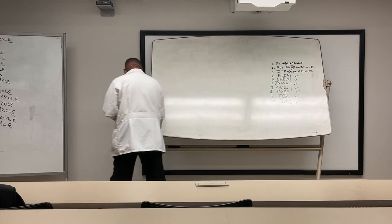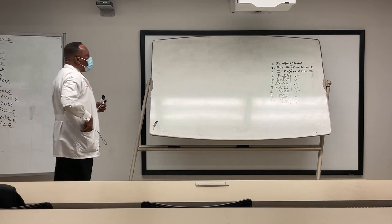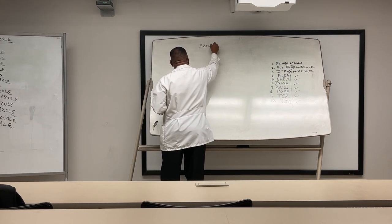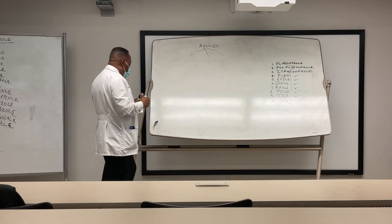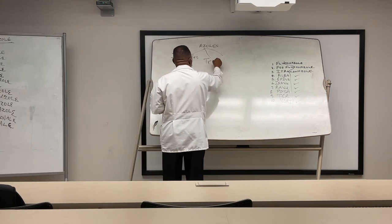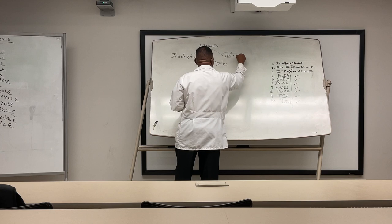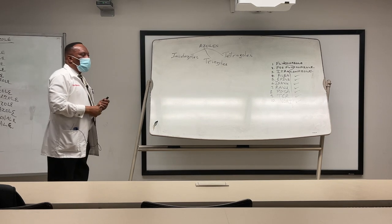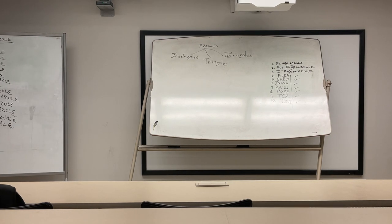Then we go to the group that will again affect the synthesis of your membrane — and that group will be your azoles. The azoles can be divided into three main groups: imidazoles, triazoles, and tetraazoles. The only tetraazole that has been approved is oteseconazole, which was very recently approved.